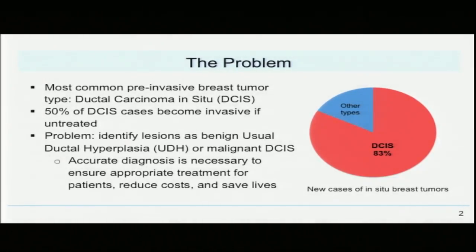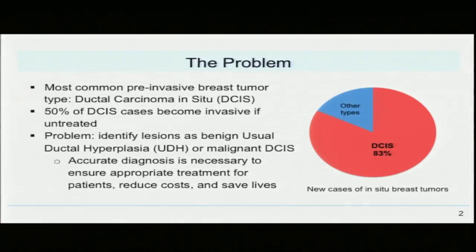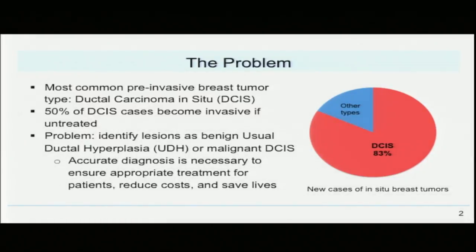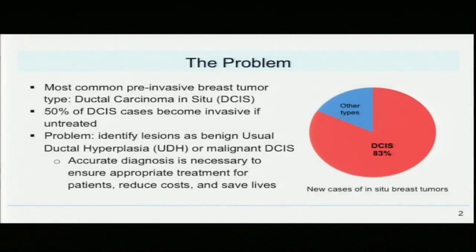This detection is done through the identification of lesions as benign usual ductal hyperplasia (UDH) or malignant DCIS. Misdiagnosis can lead to either over-treatment or under-treatment of cancer, so accurate diagnosis is crucial to ensure appropriate treatment for patients, reduce diagnosis costs, and save lives.